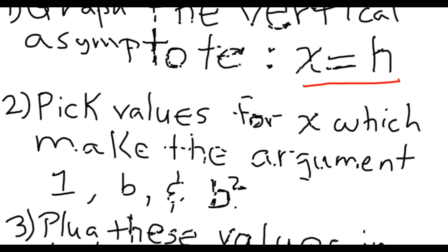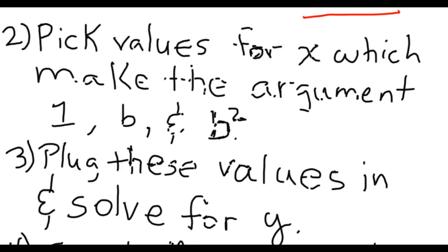Now, the next thing we need to do is we need to create some points. To pick my points, I'm going to pick values for X. Let's be lazy here. Let's make values for X which make the argument be a 1. Whatever my base is, I want it to match that, because we just said we like that. That's easy math. And then finally, I want it to be whatever my base is squared.